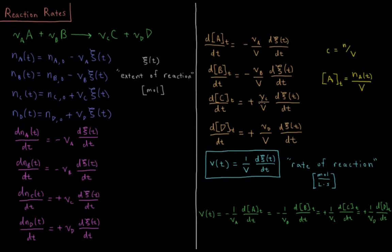C is a product that gets produced: d bracket C dt equals plus nu C over V times d xi dt, as it is for D, another product based off of its stoichiometric coefficient.